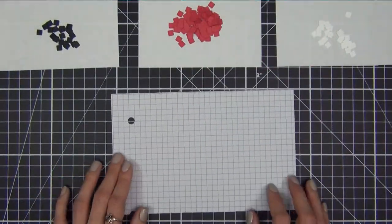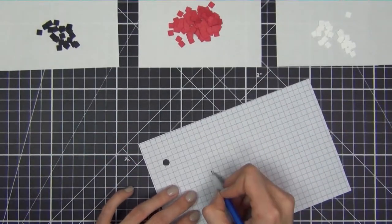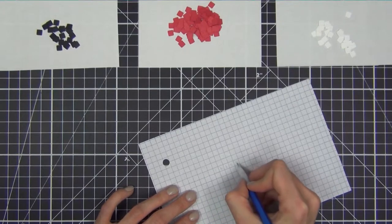After those are all done, I take a piece of inexpensive grid paper and mark the squares I need to cover. I start with the widest part of the heart, which is 13 squares across and 4 rows tall.